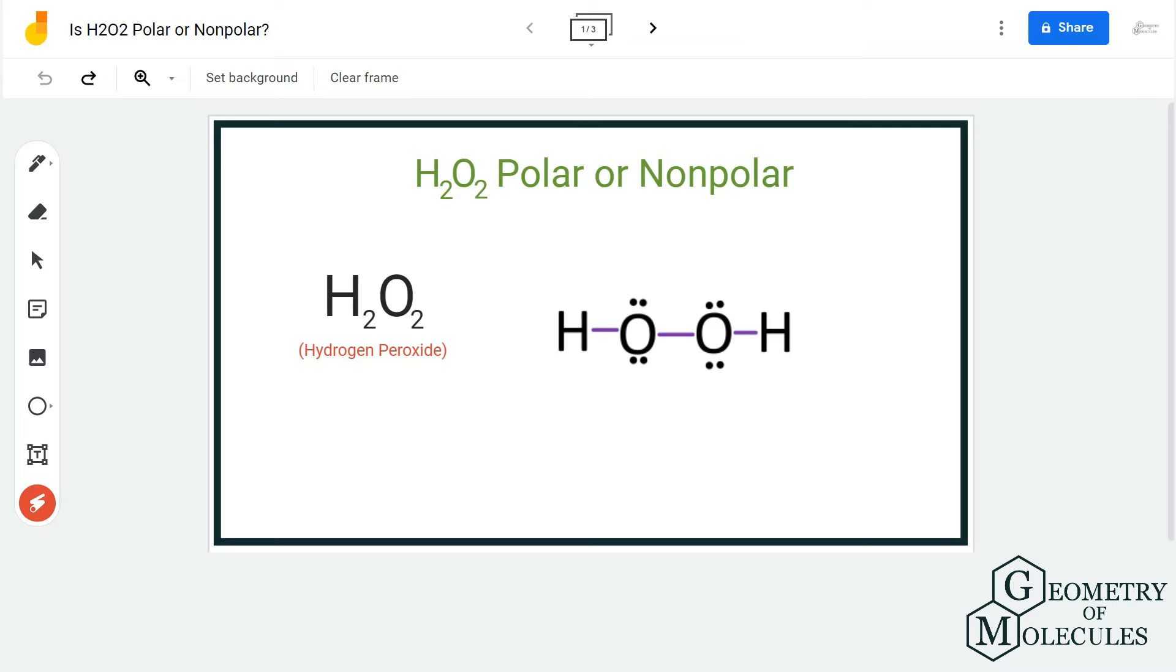If you look at its Lewis structure, the structure is quite simple as there are two oxygen atoms sharing bonds with hydrogen atoms. You cannot actually predict anything from the Lewis structure alone, and you need to know the shape of the molecule.